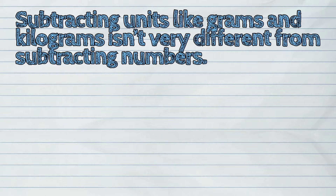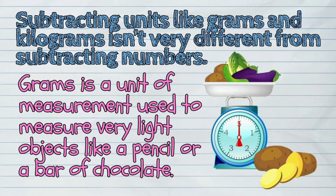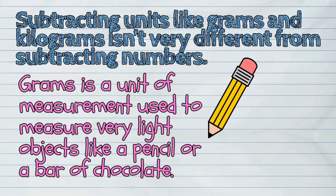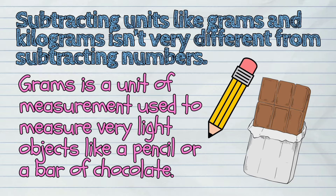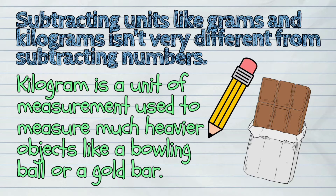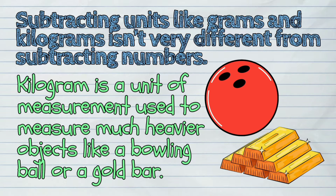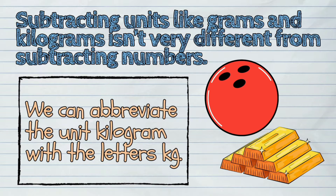Subtracting units like grams and kilograms isn't very different from subtracting numbers. Grams is a unit of measurement used to measure very light objects like a pencil or a bar of chocolate. We can abbreviate the unit gram with the letter G. Kilogram is a unit of measurement used to measure much heavier objects like a bowling ball or a gold bar. We can abbreviate the unit kilogram with the letters KG.